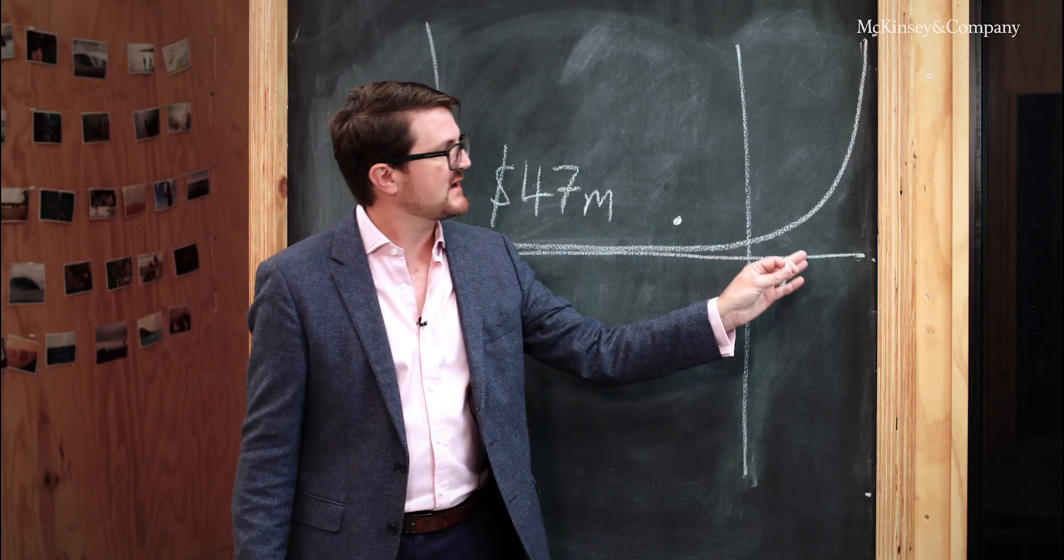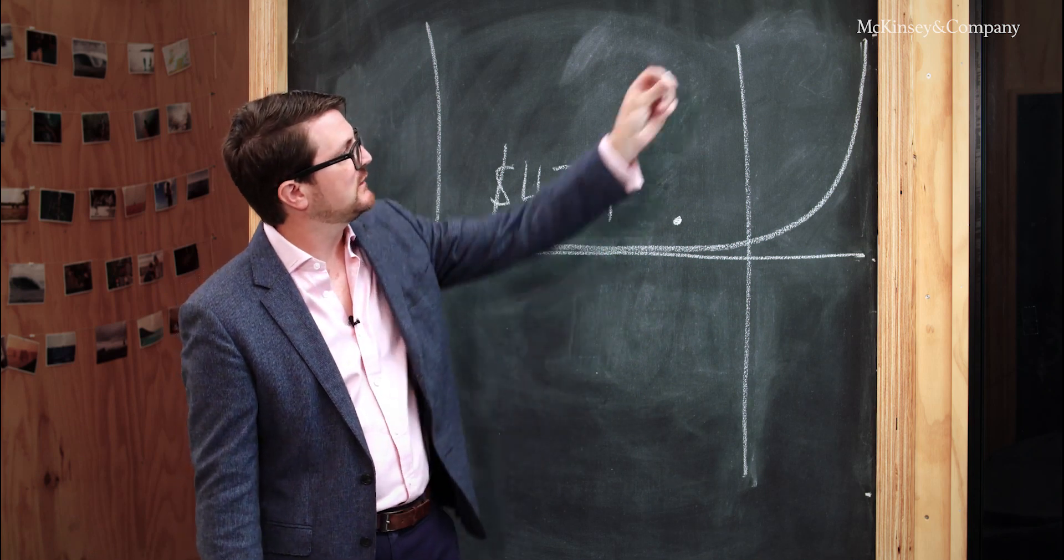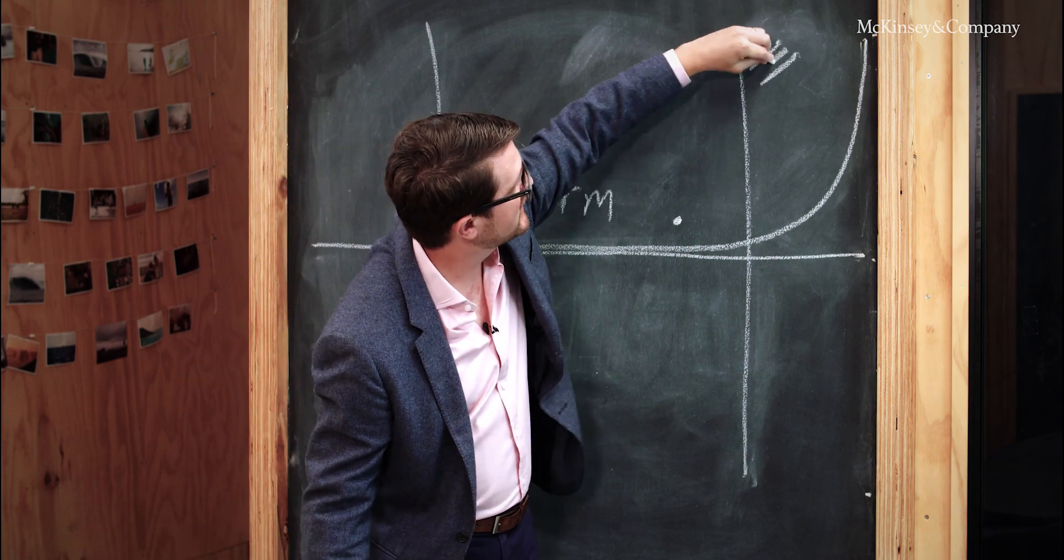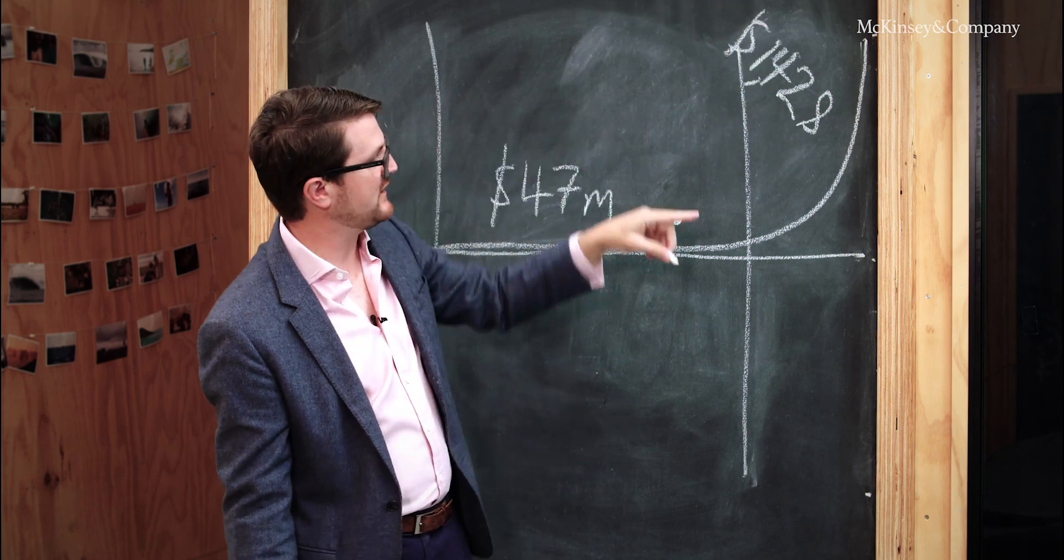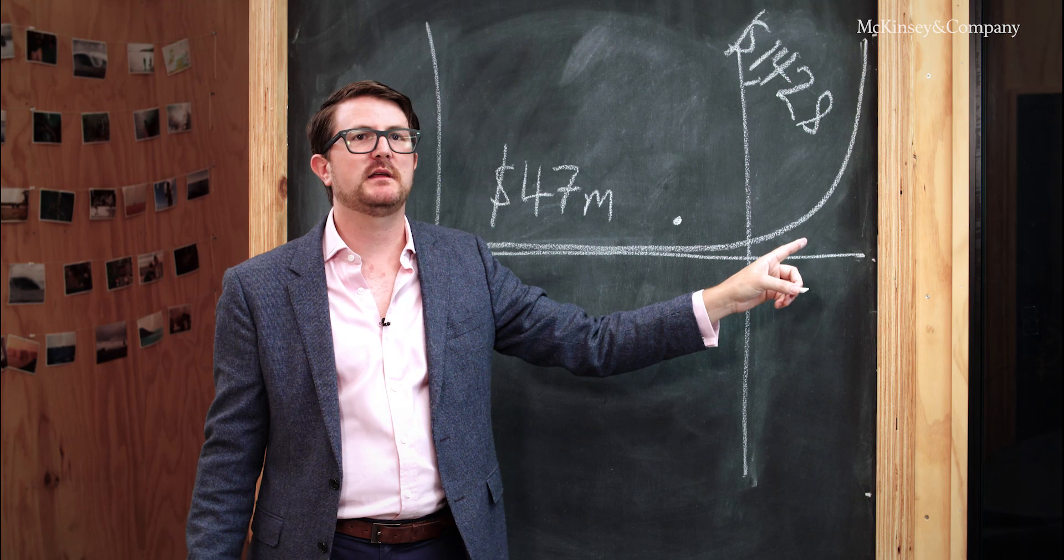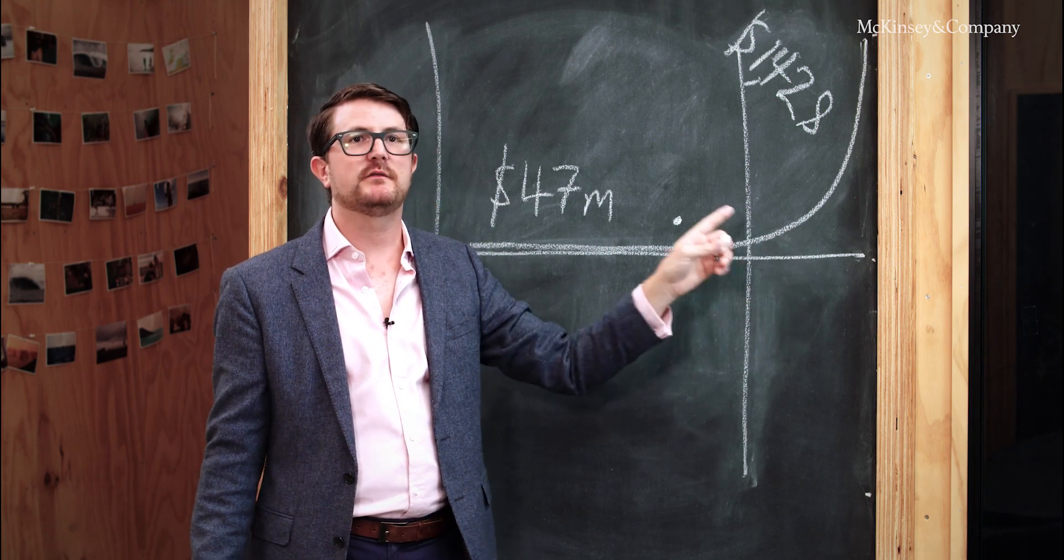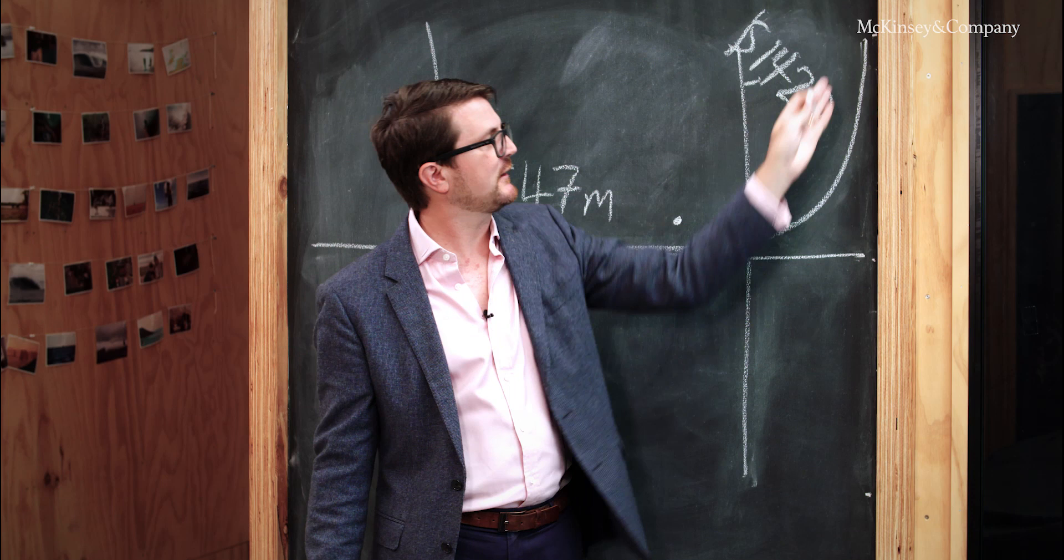But in the top of the tail, in the top 20 percent, things look a little bit different. Here companies average over 1.4 billion economic profit per year. So something decisively different is happening in this end of the power curve than it is in the middle, and the distribution is really radical.